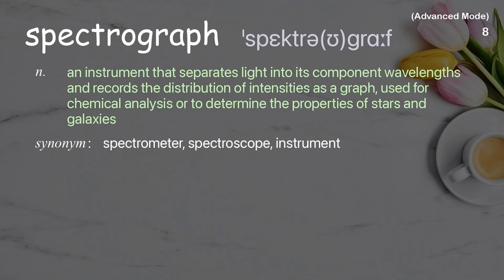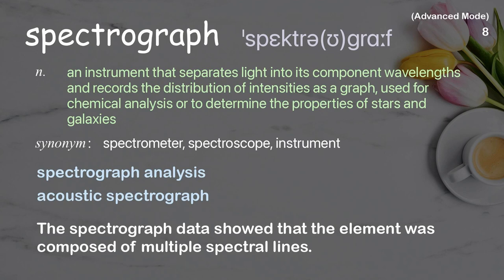Spectrograph: An instrument that separates light into its component wavelengths and records the distribution of intensities as a graph, used for chemical analysis or to determine the properties of stars and galaxies. Examples: Spectrograph analysis, acoustic spectrograph. The spectrograph data showed that the element was composed of multiple spectral lines.